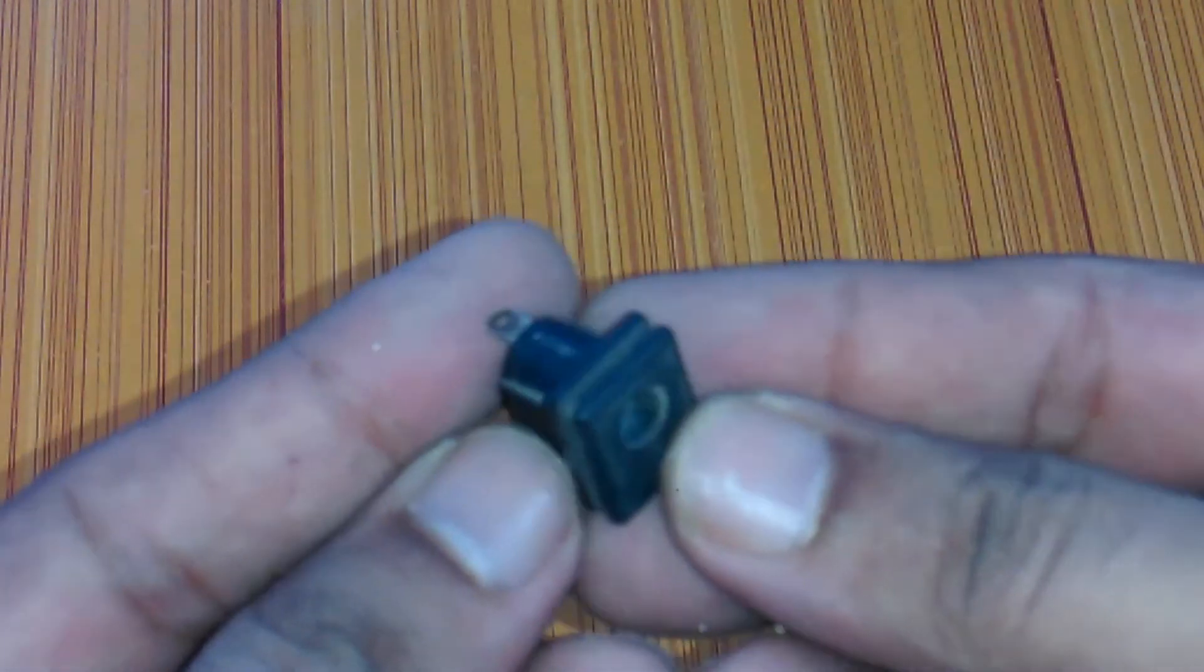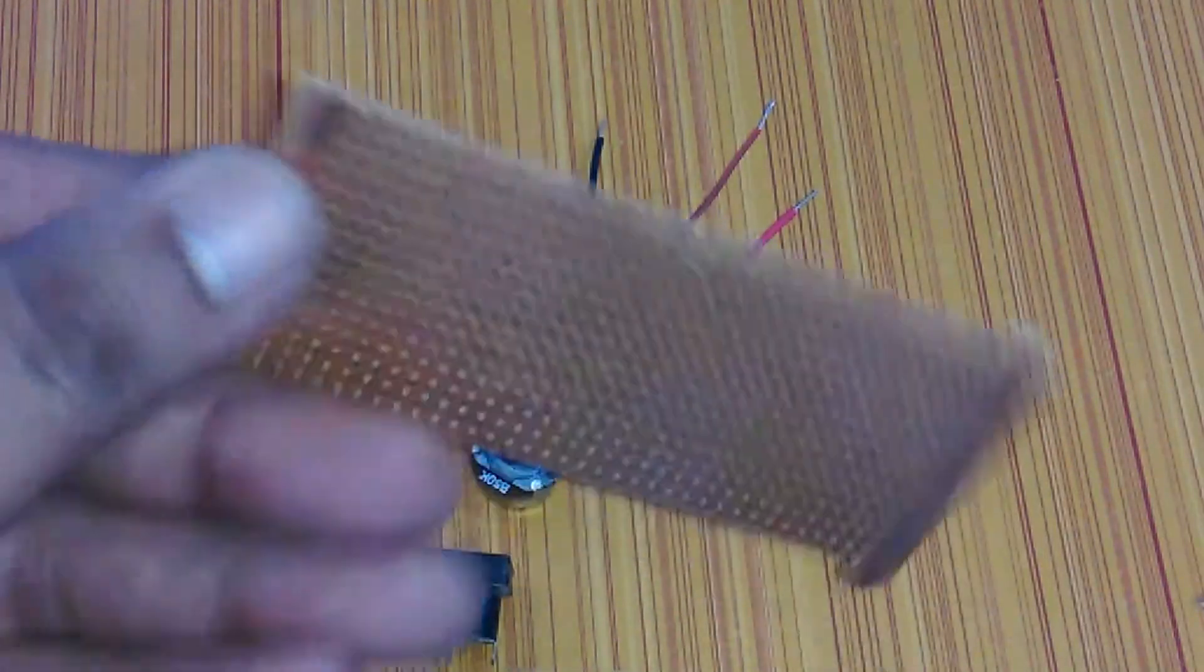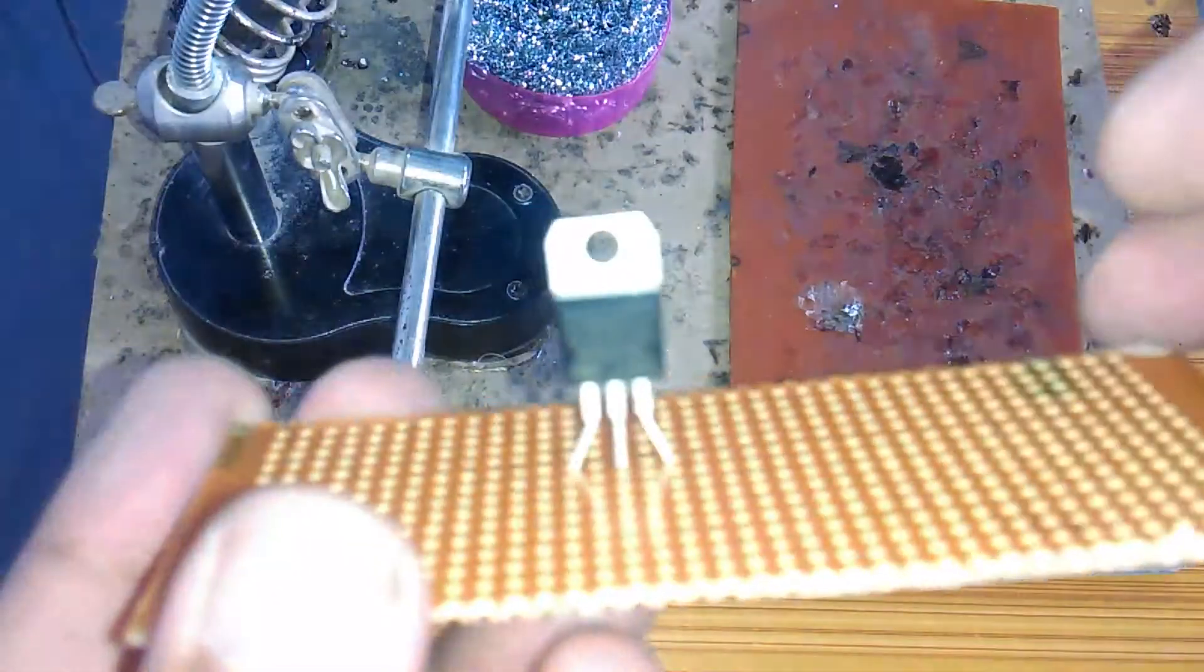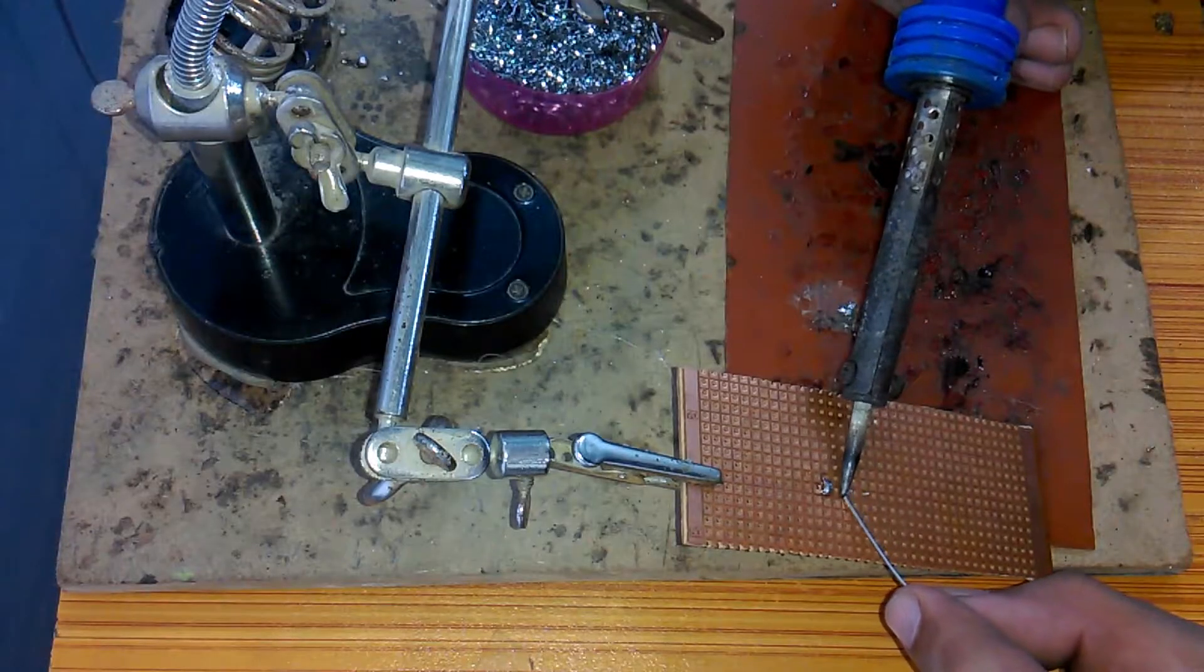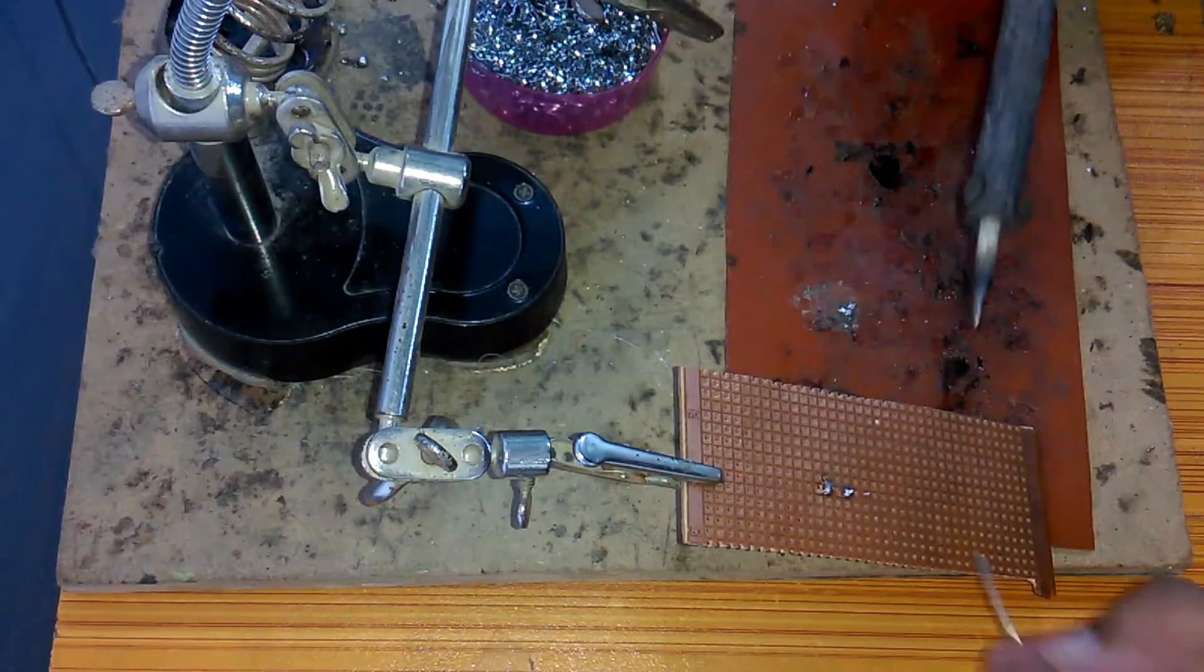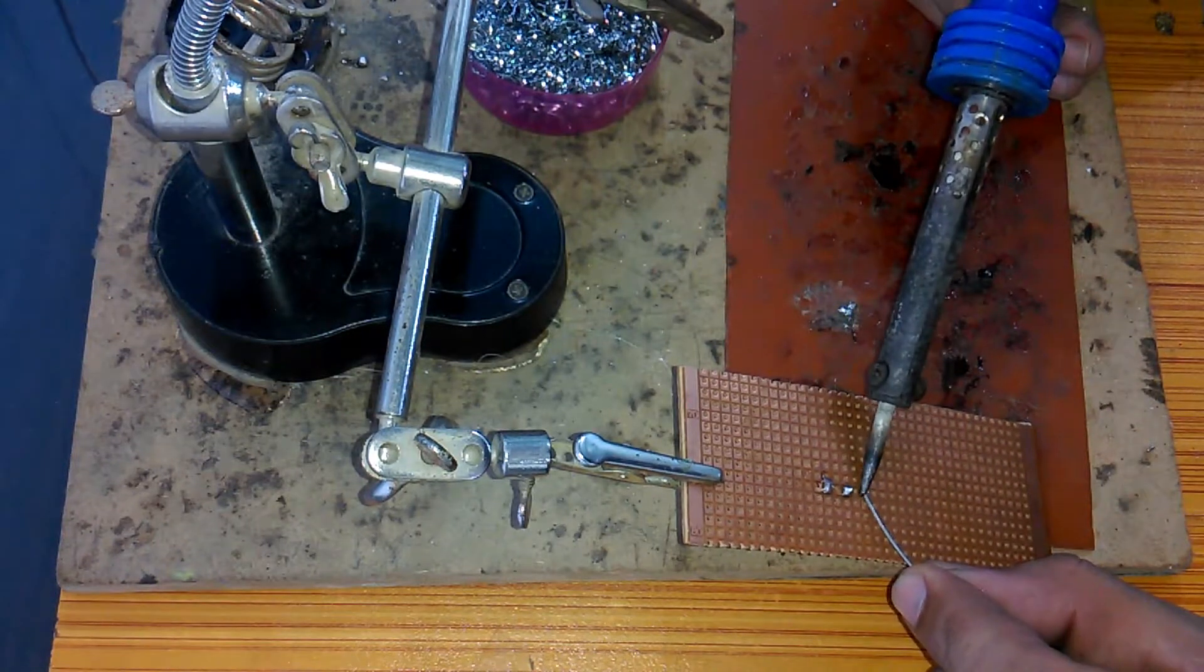First, we start with LM317 voltage regulator. Fix this on a vero board and solder the legs, and make sure that you don't apply too much heat as it can damage the regulator.